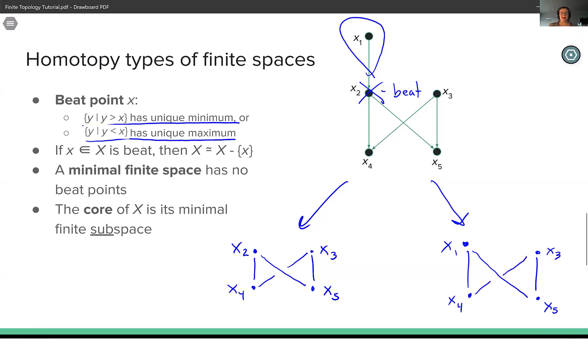If a space has no beat points remaining, it's called a minimal finite space. And you can see that these two spaces I've drawn on the bottom here do not have any beat points. Each point has two distinct points in its down set or up set. And so when we've removed all beat points from a space, what we're left with is a core. And notice through this example here that the core is not unique.